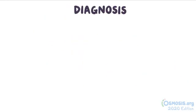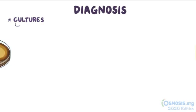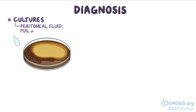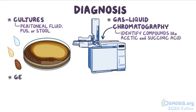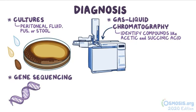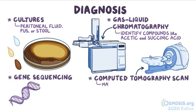Diagnosis is made by isolating Bacteroides fragilis in cultures from biological samples, like peritoneal fluid, pus, or stool. Gas liquid chromatography, a process that analyzes compounds that can be vaporized, can also be used to identify the specific compounds produced by Bacteroides fragilis, like acetic and succinic acids. Gene sequencing can also be used to identify the bacteria. A computed tomography scan may show abscesses or the presence of gas at the infected site.